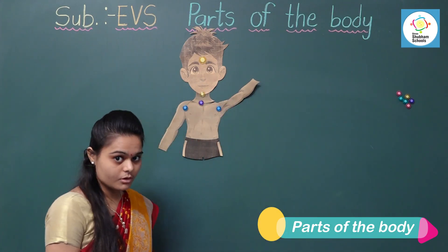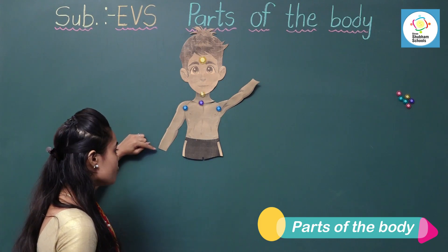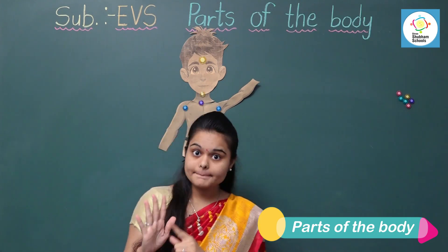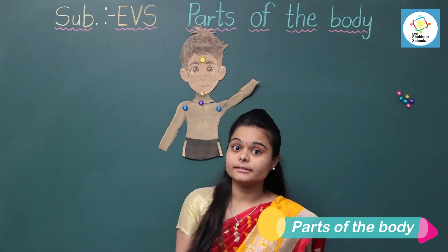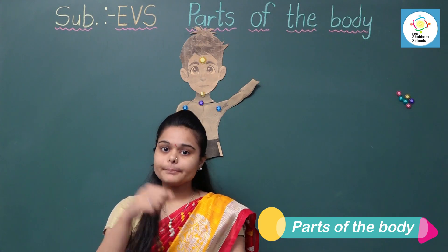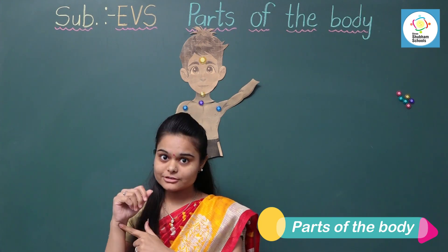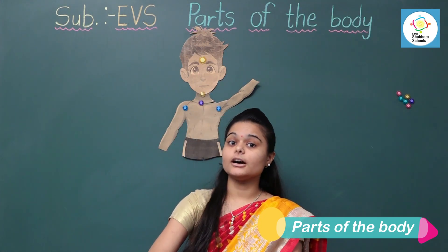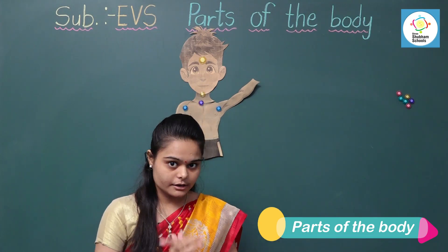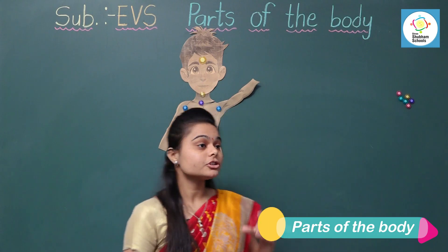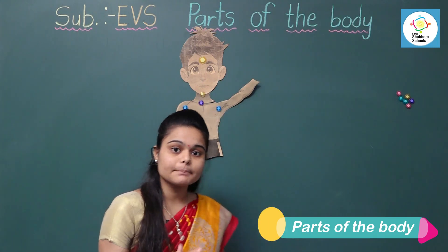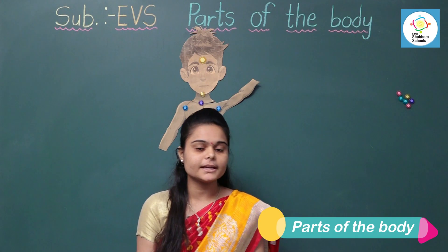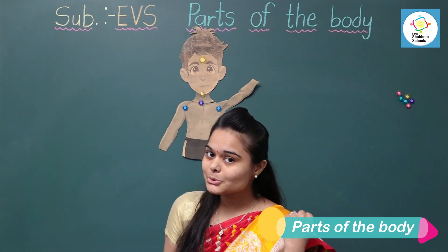Do you know? Shoulders, elbow, wrist, palm, fingers and thumb make a hand. Shoulder, arm, elbow, wrist, palm, fingers and thumb — all these parts together make one hand. And we have a pair of all these parts, meaning we have two of each of these parts in our body.